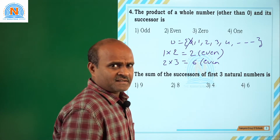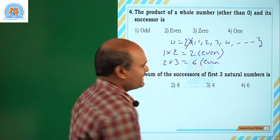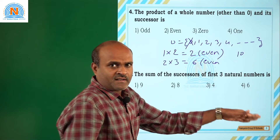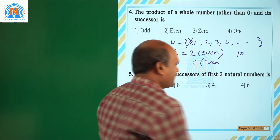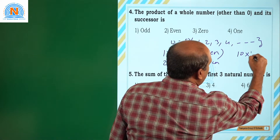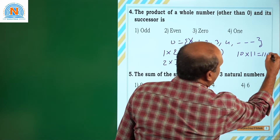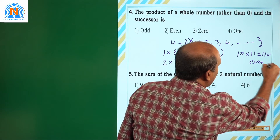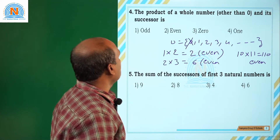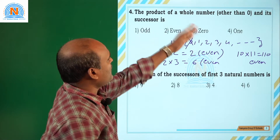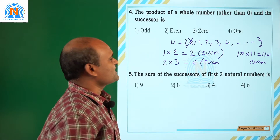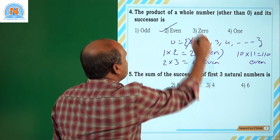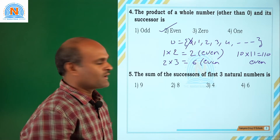Suppose I am considering 10 as a whole number — what is the successor of 10? It's 11. So 10 into 11 equals 110, which is also an even number. So the product of a whole number and its successor is always even. The correct option is 2.